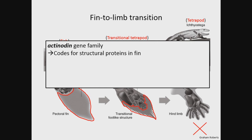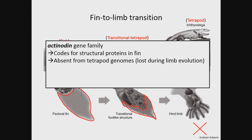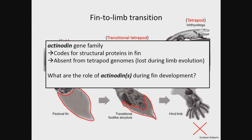We are working on the actinodon gene family. These code for structural proteins in the fin. They are absent from all tetrapod genomes, suggesting they were lost during the fin-to-limb transition. During this presentation, I'm going to be talking about some of the roles of actinodon during fin development, as well as proposing some hypotheses on how these genes were lost during tetrapod evolution.